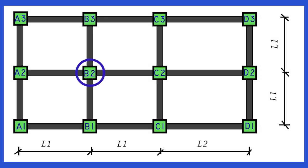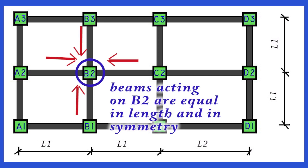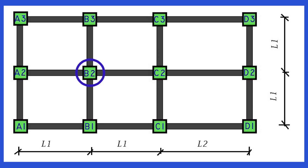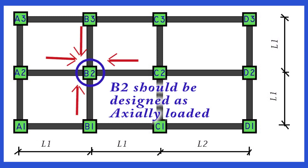supports beams which are equal in length and symmetrically arranged. Provided the floor is uniformly loaded, column B2 will resist an axial load only and should be designed as such.